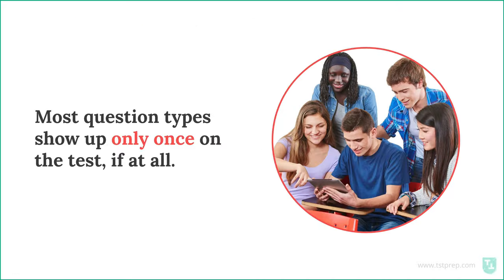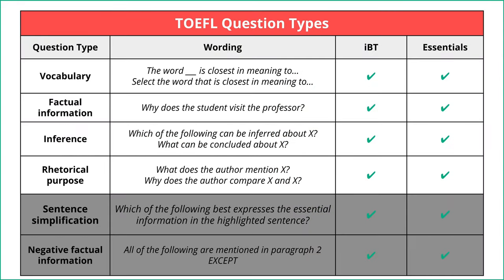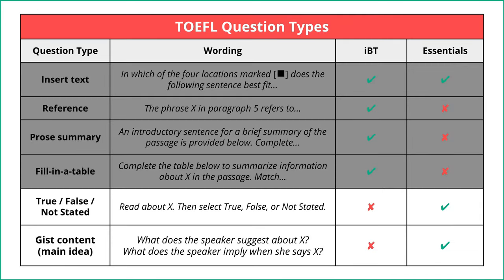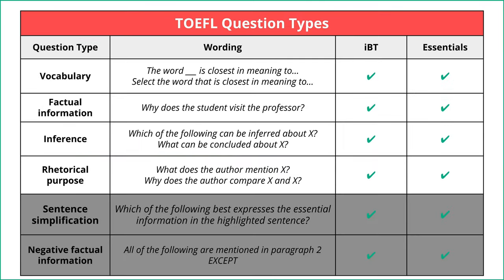Most question types only show up once on the test, if at all. The question types you will definitely see are vocabulary, factual information, inference, and rhetorical purpose — these are the most common. Sentence simplification, negative factual information, and insert text only show up once in a while. The other three question types don't show up at all. So there are really only about five question types to worry about: main idea, vocabulary, factual information, inference, and rhetorical purpose.